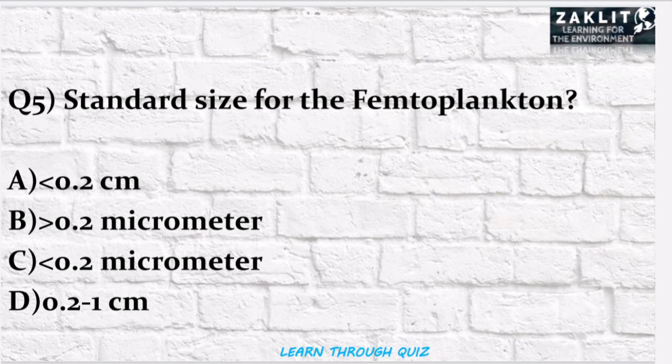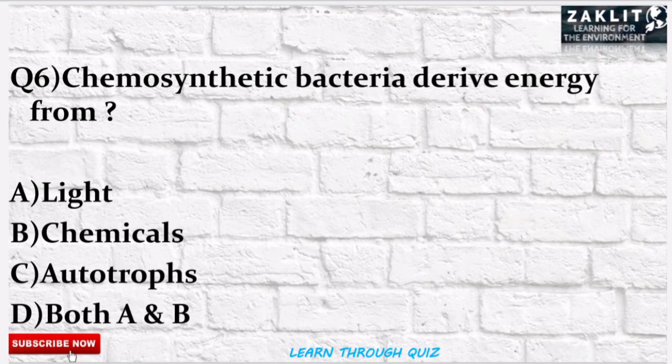The next question was: the standard size for femtoplankton is how much? The correct option is C — femtoplankton have a size less than 0.2 micrometers. The sixth question was: chemosynthetic bacteria derive energy from which of the following?